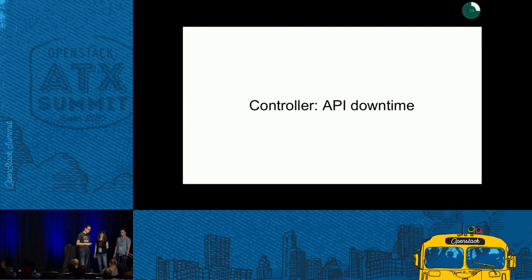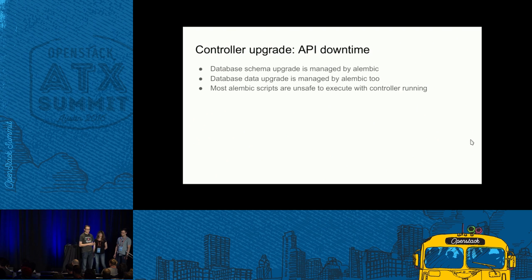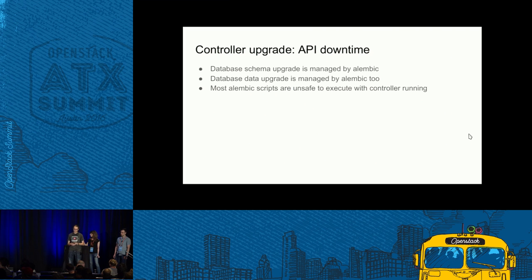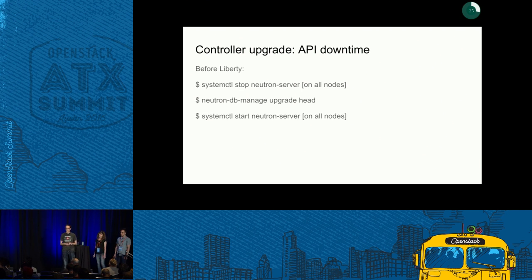So let's cover API downtime. Why do we even have it? As I already said, because we have this phase where we need to run the contract migrations. Migrations for the database schema and data are handled by the Alembic library. Most of these scripts are not safe to run when the controller is still running.